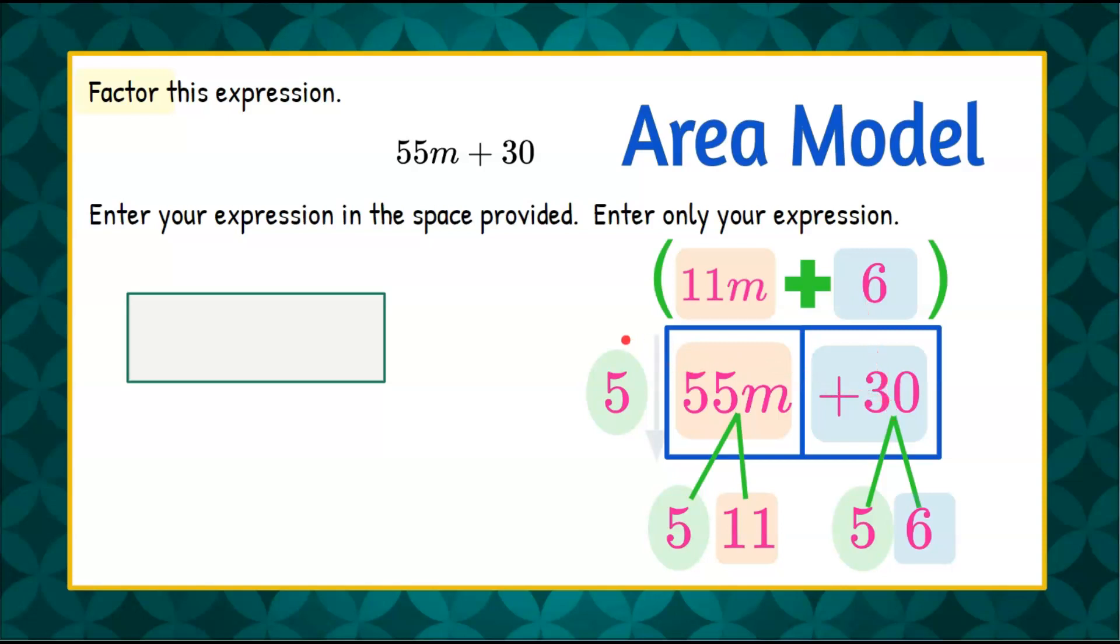So now we have our dimension of 5 for our area model multiplied right here. We're going to put our 5 in the box and we're going to multiply it by our second dimension which is adding these two together and in our parentheses, 11m plus 6.